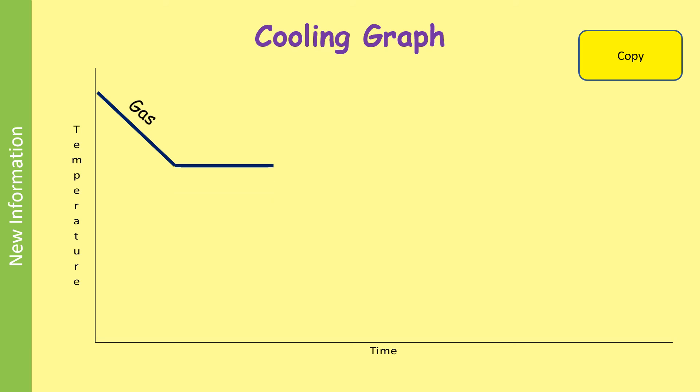Eventually, you get to a flat part of the graph where energy is continuing to be removed, but the temperature stops falling for a while. And that is because the gas is condensing into a liquid. And that process gives out some energy.